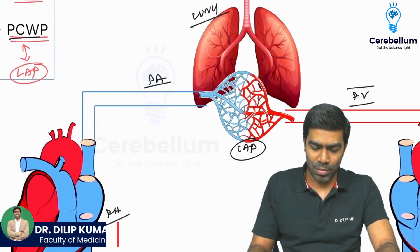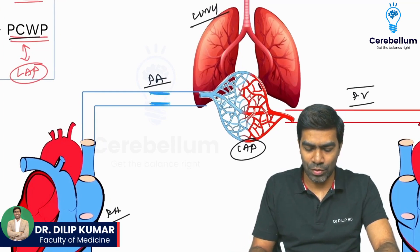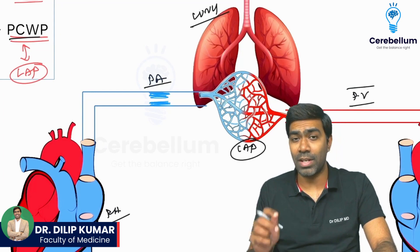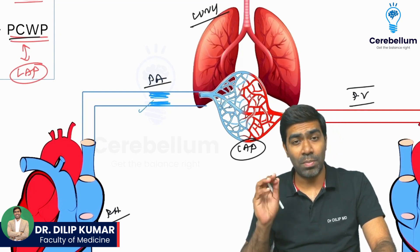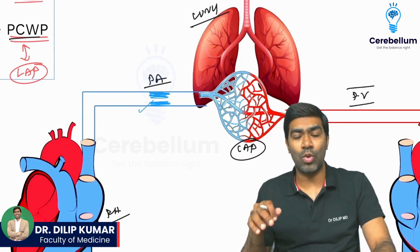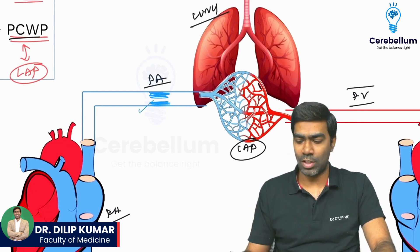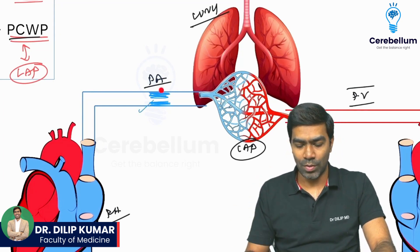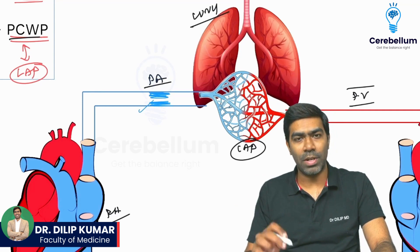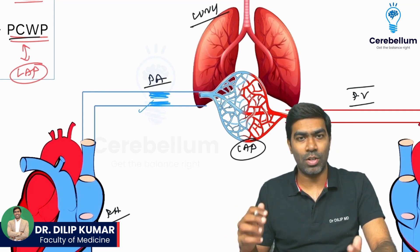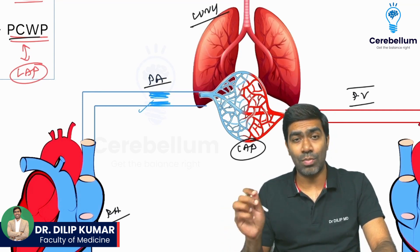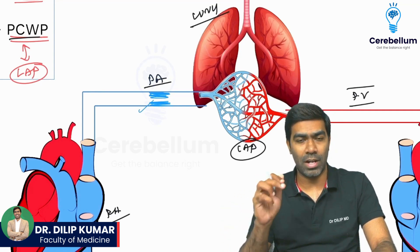The problem in type 1 pulmonary hypertension is at the level of small pulmonary arterioles. This is a disease of small pulmonary arterioles, and that is why you will not be able to pick up this disease angiographically.